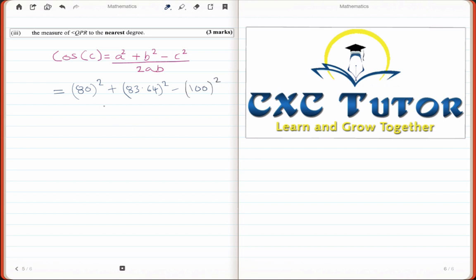All divided by 2 times 80 times 83.64. That should give me a number of 0.2537.